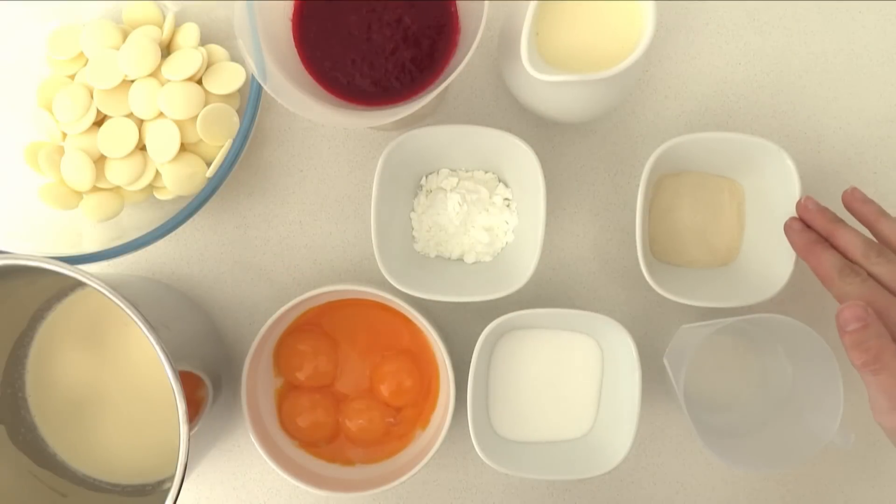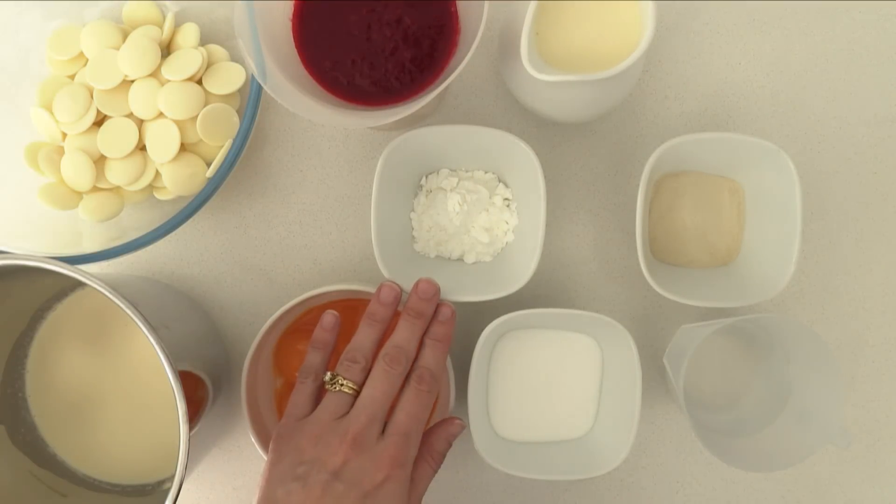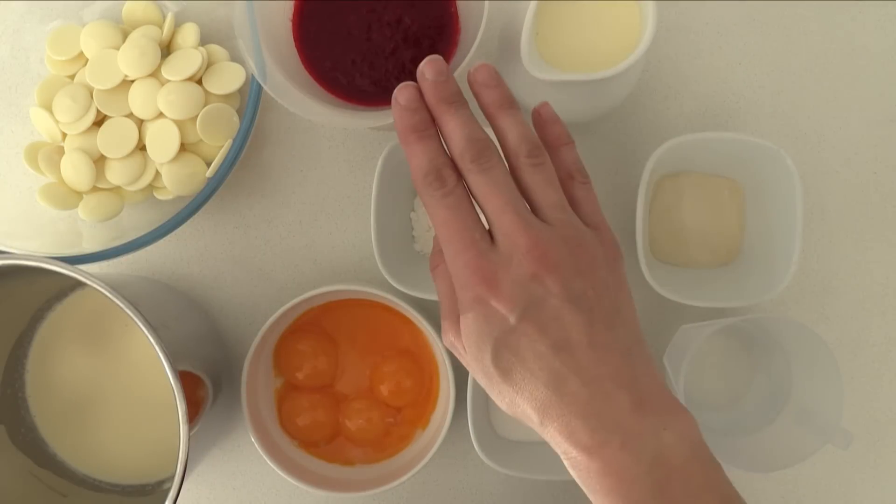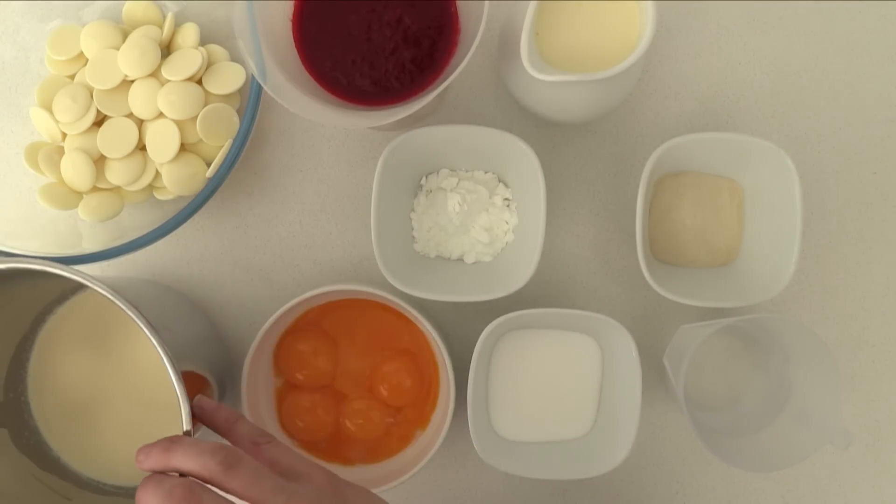To make the mousse you will need gelatin, water, egg yolks and sugar, corn starch, cream, the raspberry puree that we made earlier, white chocolate and more cream.